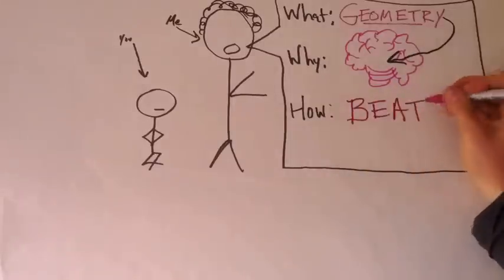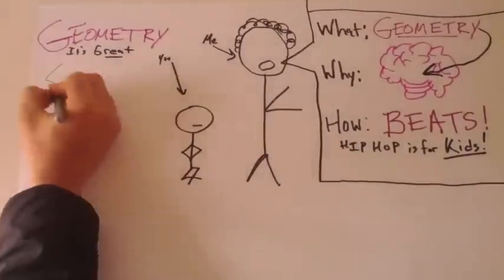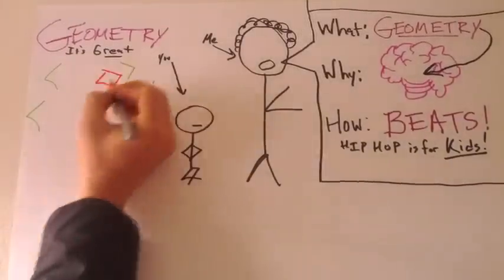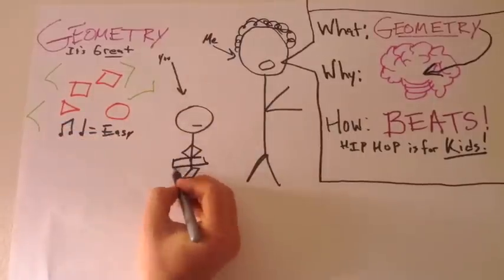Instead of hearing lessons, let's learn it with the rhymes. Okay. This is geometry, and buddy, it's great. We learning about angles and studying shapes. It can be easy if we learn it with the beat. So turn off your voice, listen up, and take a seat.